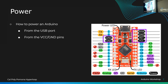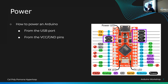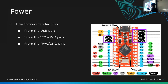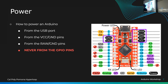You can also power from the VCC and ground pins, which has reverse polarity protection and regulates down to 5 volts. You can also use the RAW and ground pins — RAW means raw voltage, unregulated — so you can put 9 or 12 volts in, but not above 12 volts or it'll start frying. One important rule: never power the Arduino from the GPIO pins.